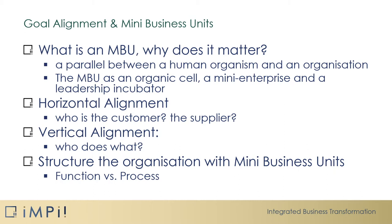We will look at horizontal alignment — who is the customer, who is the supplier. Then we will take a look at vertical alignment — who does what and what is the role of the different organisational layers in the company. Finally, we will look at the structure of the organisation through the use of Mini-Business Units: function versus process.